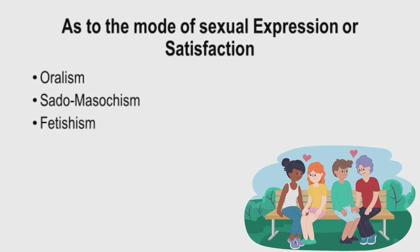Those are the different classifications of sexual abnormalities based on instinctual sexual urge. Now we have the classification according to the mode of sexual expression or way of sexual satisfaction. The first is oralism — a sexual abnormality where a certain person prefers the use of the mouth as a way of sexual gratification, such as fellatio, cunnilingus, or anilingus. They prefer using their mouth to satisfy themselves rather than the normal sexual act using the sexual organs of both sexes.